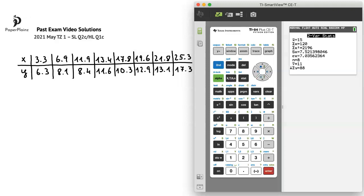On this screen, we get some statistical data about x and y. As you can see, x-bar (the mean of the x-values) is 15, and y-bar (the mean of the y-values) is 11.